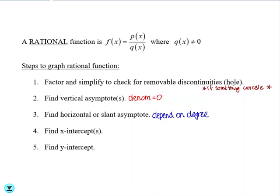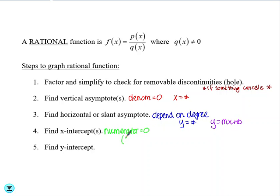Your vertical asymptote should be of the form x equals a number. Your horizontal asymptote will be y equals a number, but a slant asymptote will be in the form y equals mx plus b. Next, you need to find the x-intercept, which you find by setting the numerator equal to 0, giving you a point of the form (number, 0). And lastly, you find the y-intercept by plugging in 0 for x.